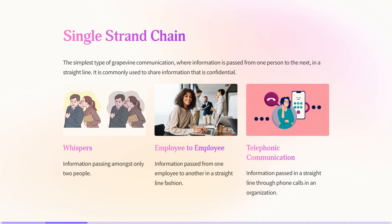The first type of grapevine communication is called the single strand chain. Here, information is passed from one person to the next in a straight line. It is commonly used to share confidential information, passed through whispers from employee to employee or through telephonic communication. For example, suppose your manager is going to give a raise of one thousand rupees or one thousand dollars — it automatically passes as whispers from employee to employee or through telephonic communication.